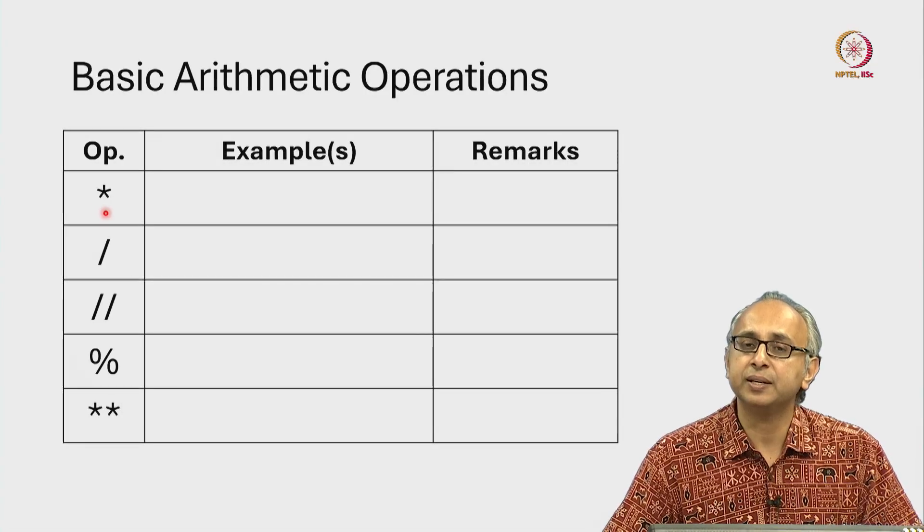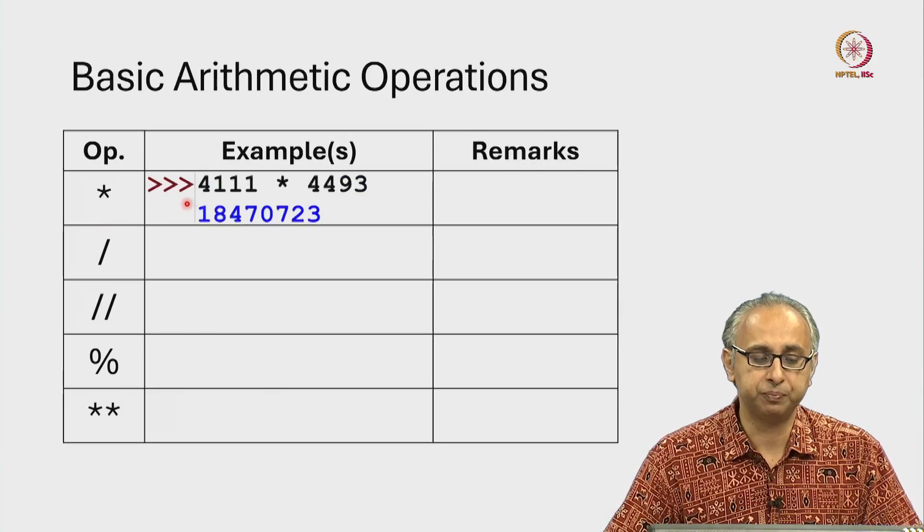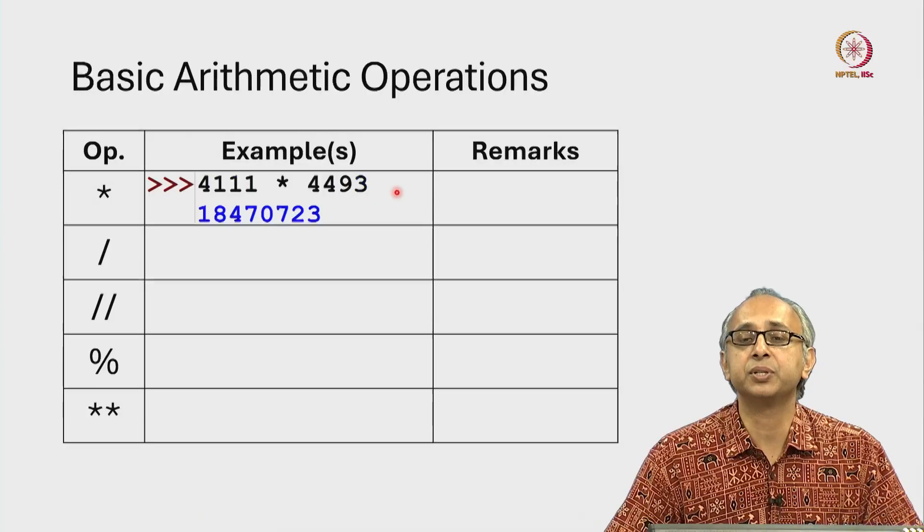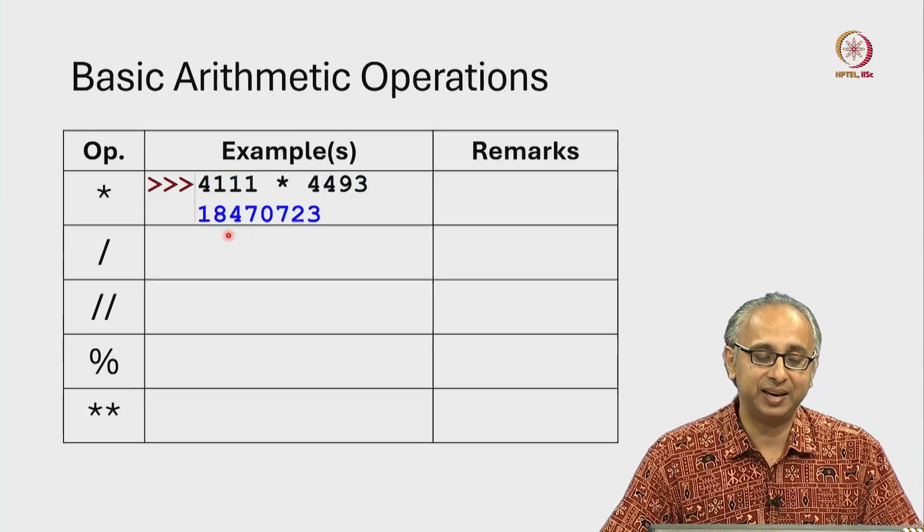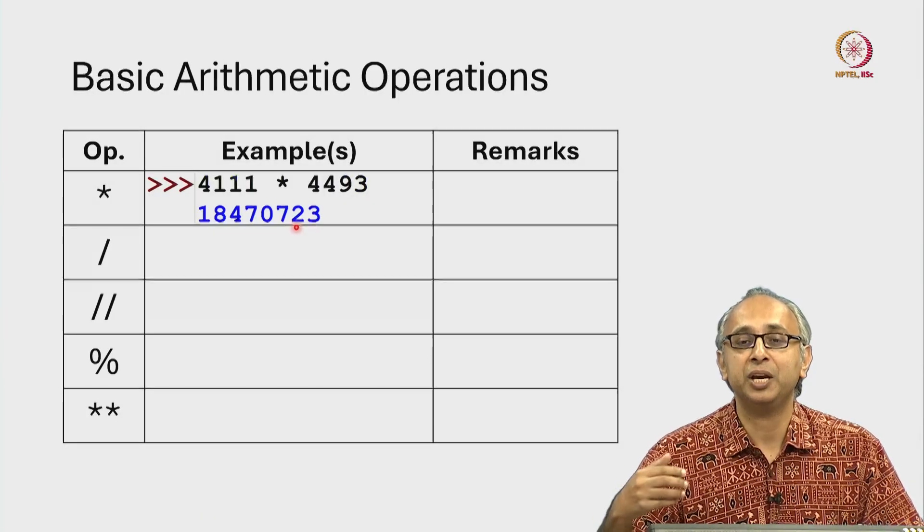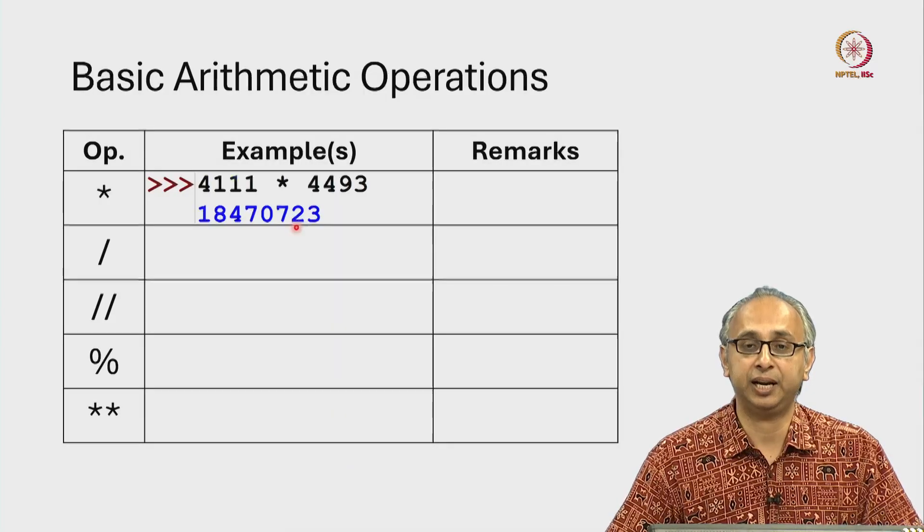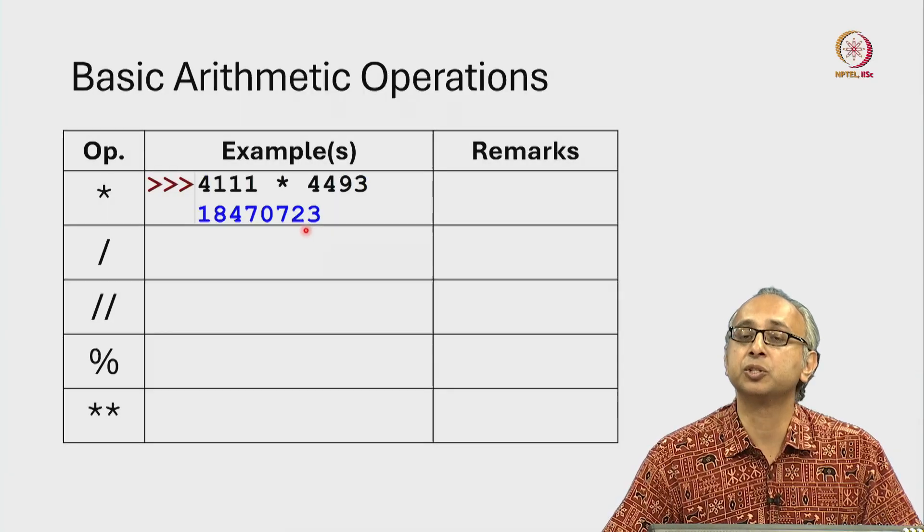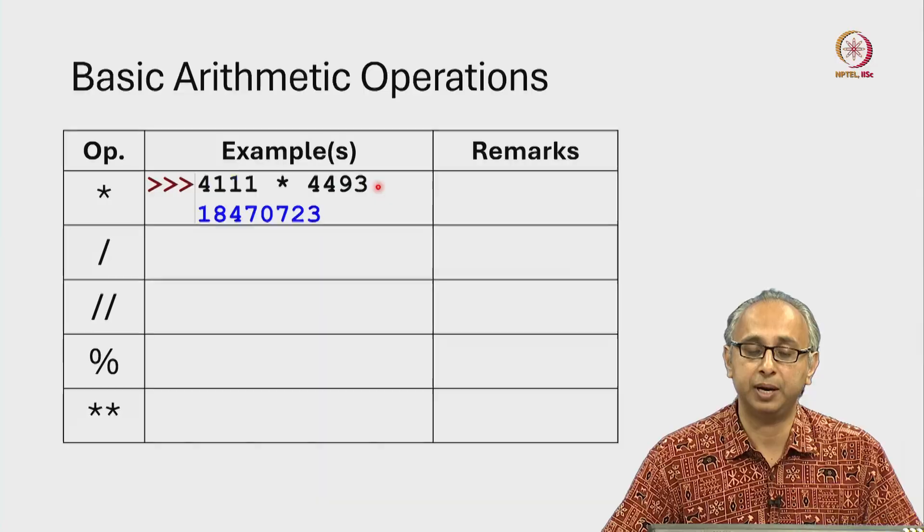So firstly we said this asterisk is multiplication. So for example if I take these two large prime numbers and multiply them, I get a number that we saw in one of the earlier lectures. We know of course that this is not a prime, it's the product of these two numbers.